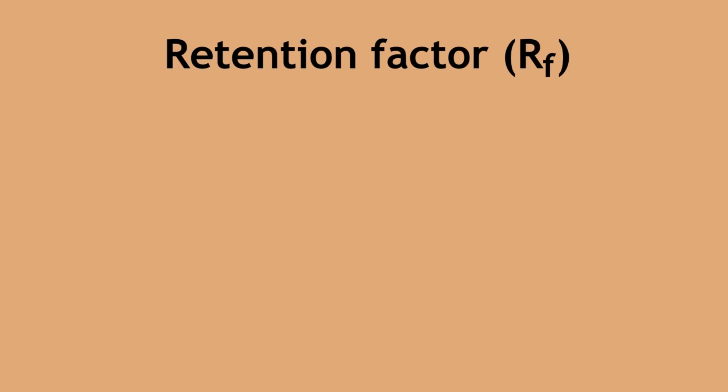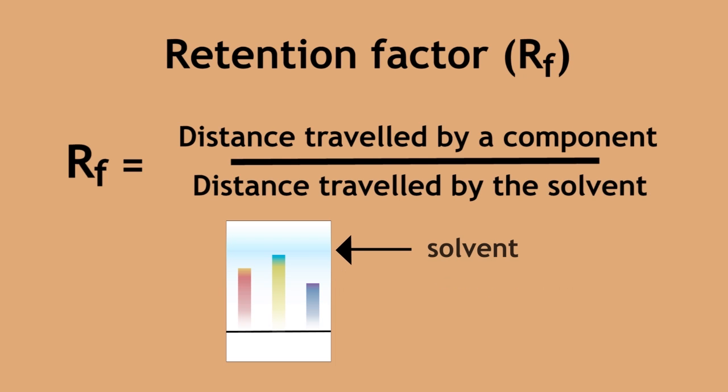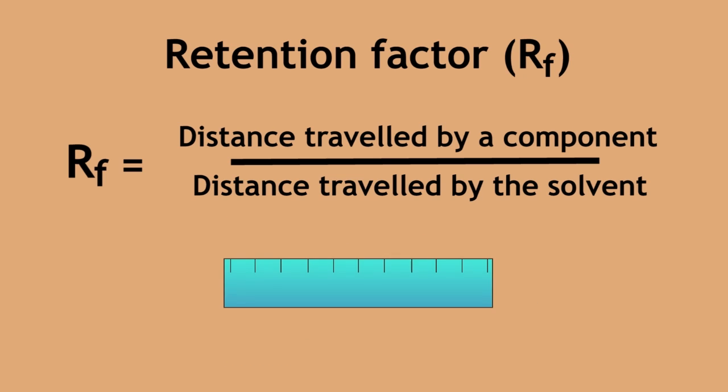The retention factor, or RF value, is a measure of the distance that a separated component has traveled compared to the distance that the solvent, in our example water, has traveled. These distances can be measured using a ruler.